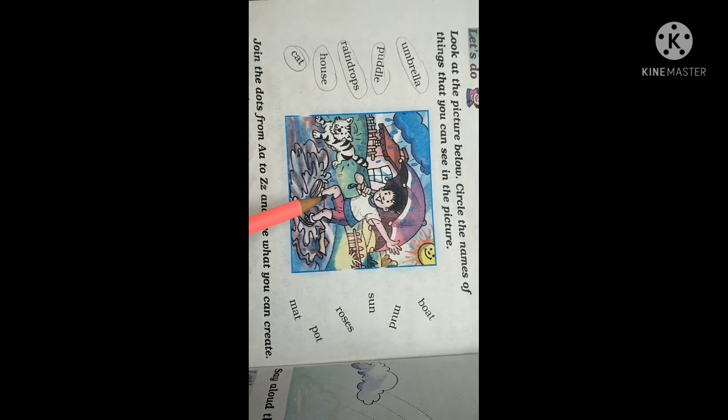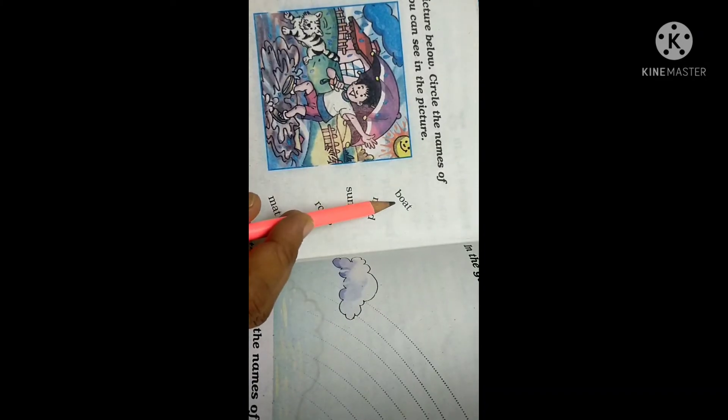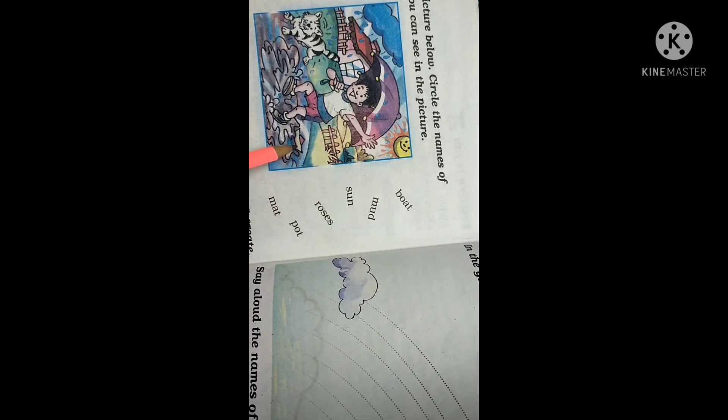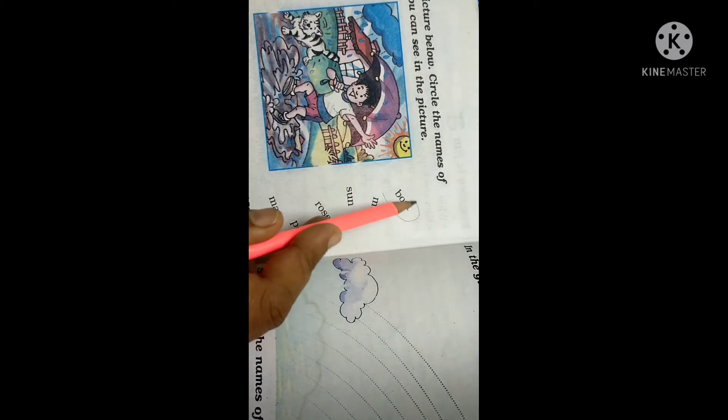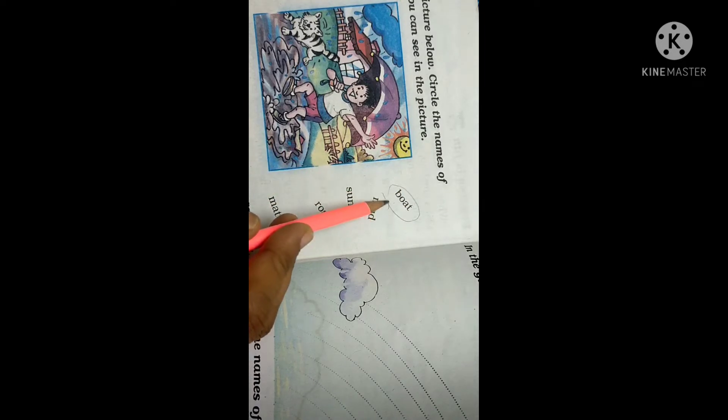Cat. Yes. Boat. Do you have boat? Yes. Boat is here. Boat we have. Yes. Sun. Yes, sun is also there. Roses.